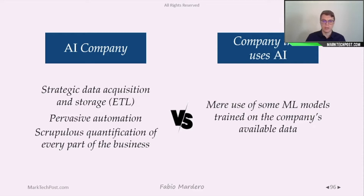For example, an AI company has some form of strategic data acquisition and storage, pervasive automation, and a scrupulous quantification of every part of the business. That's what a real AI company is.